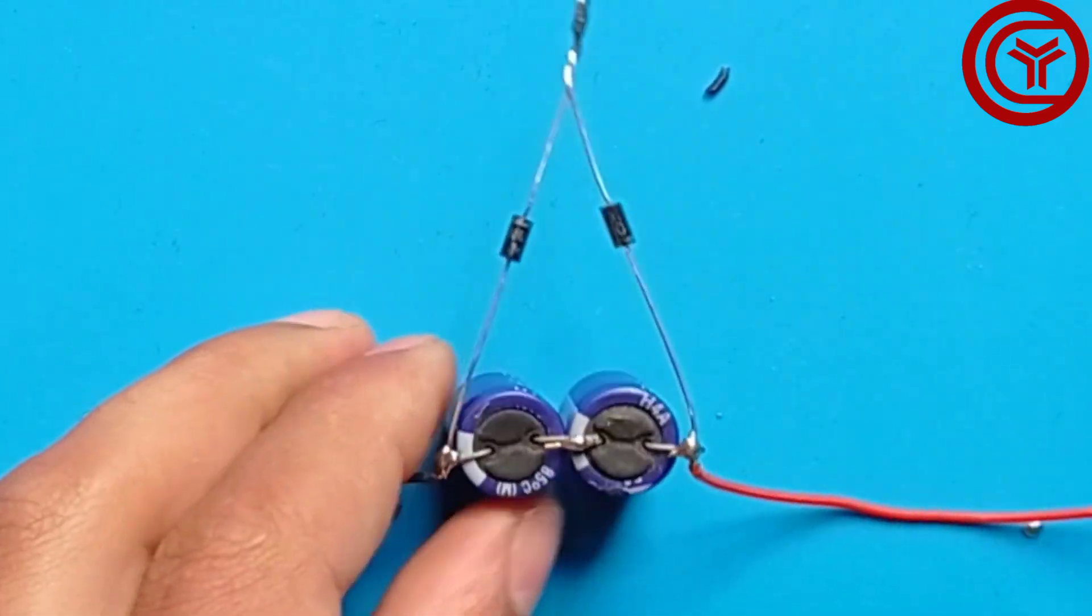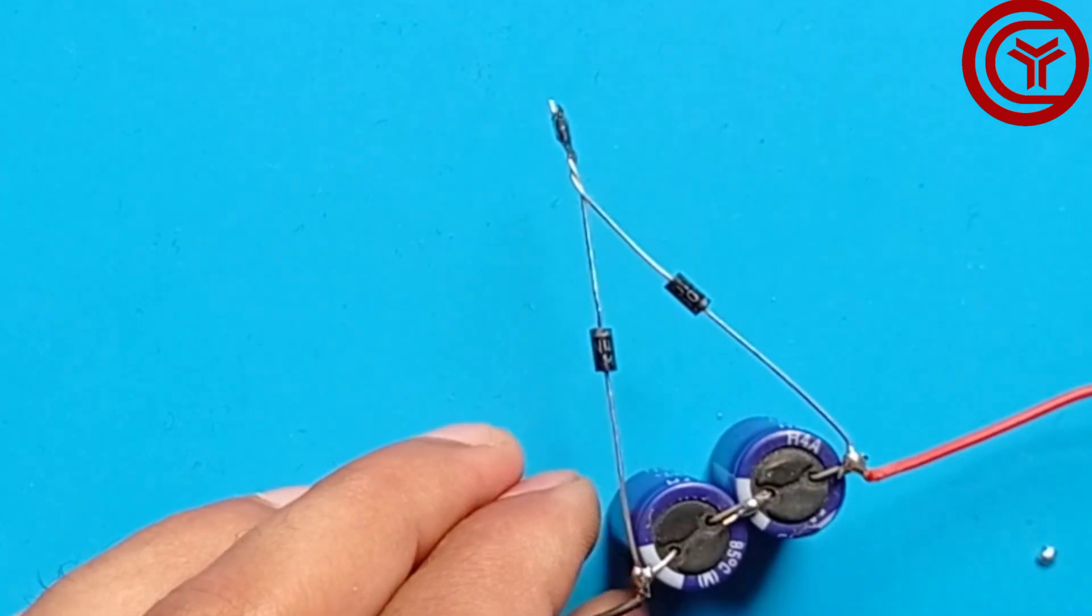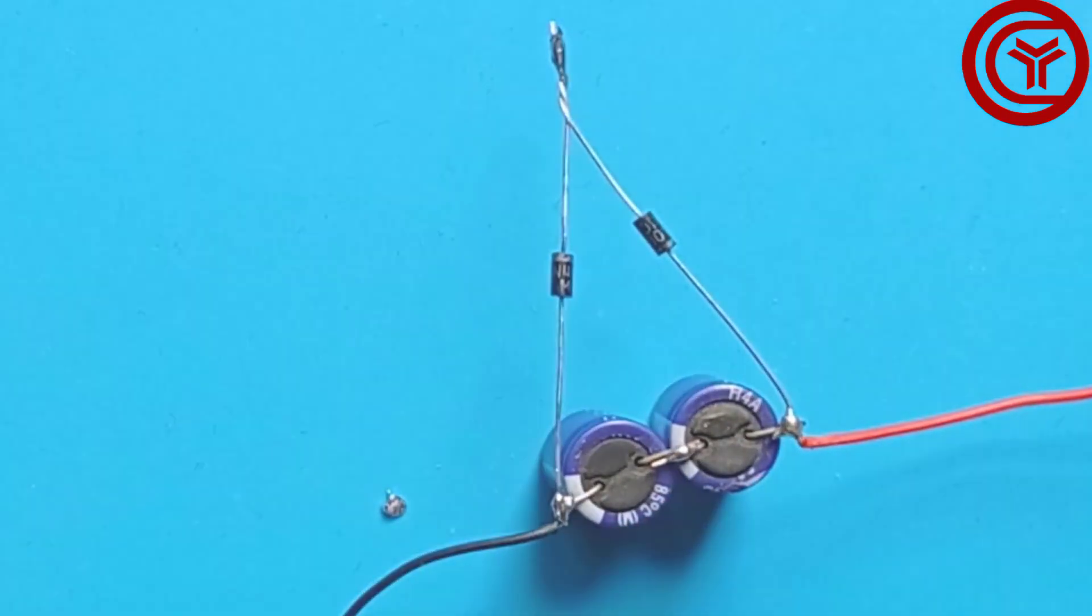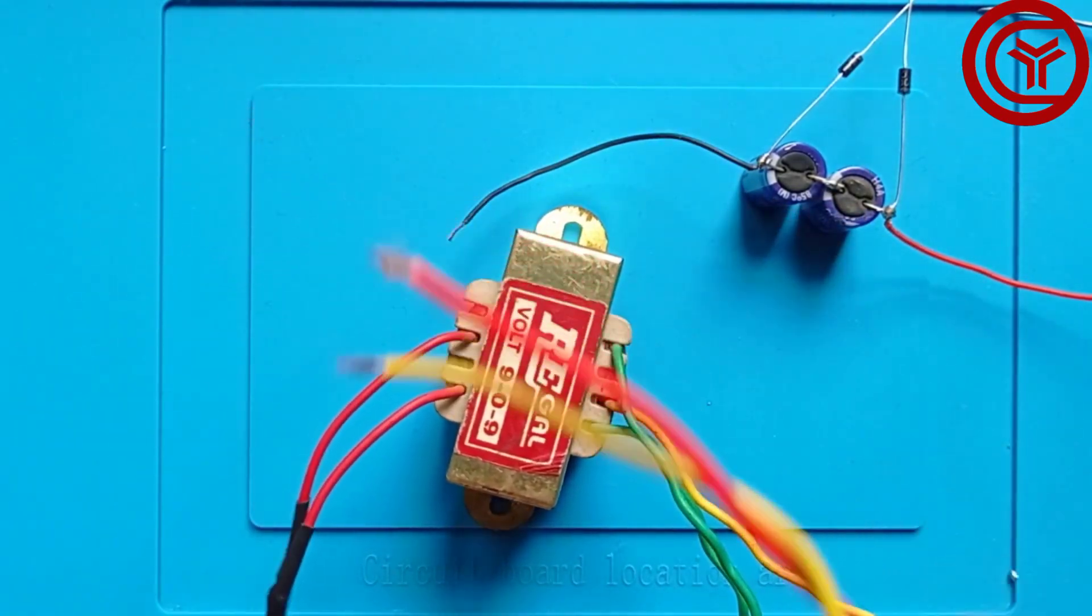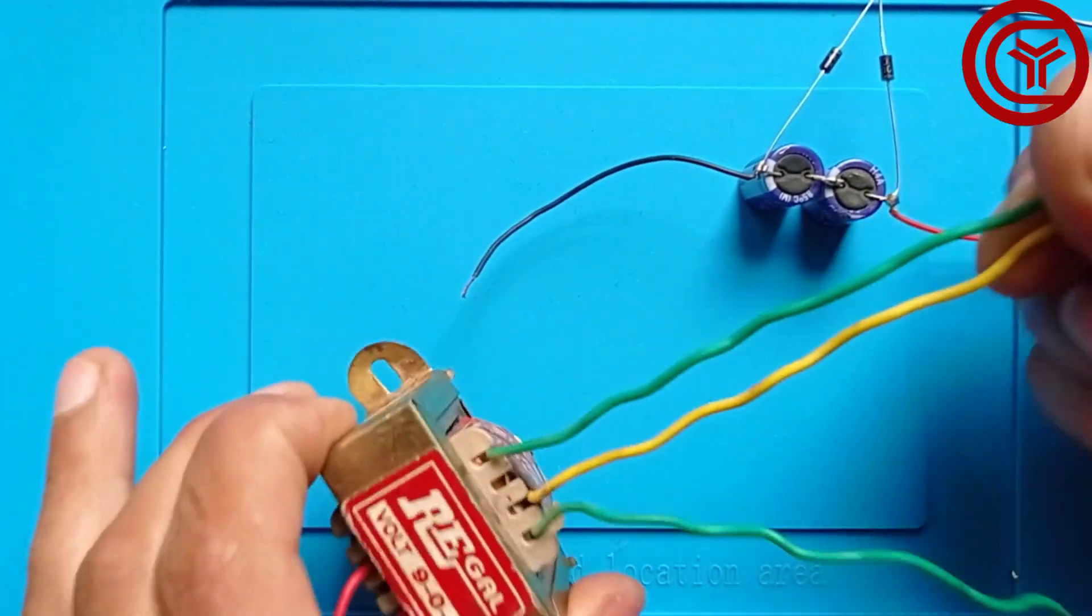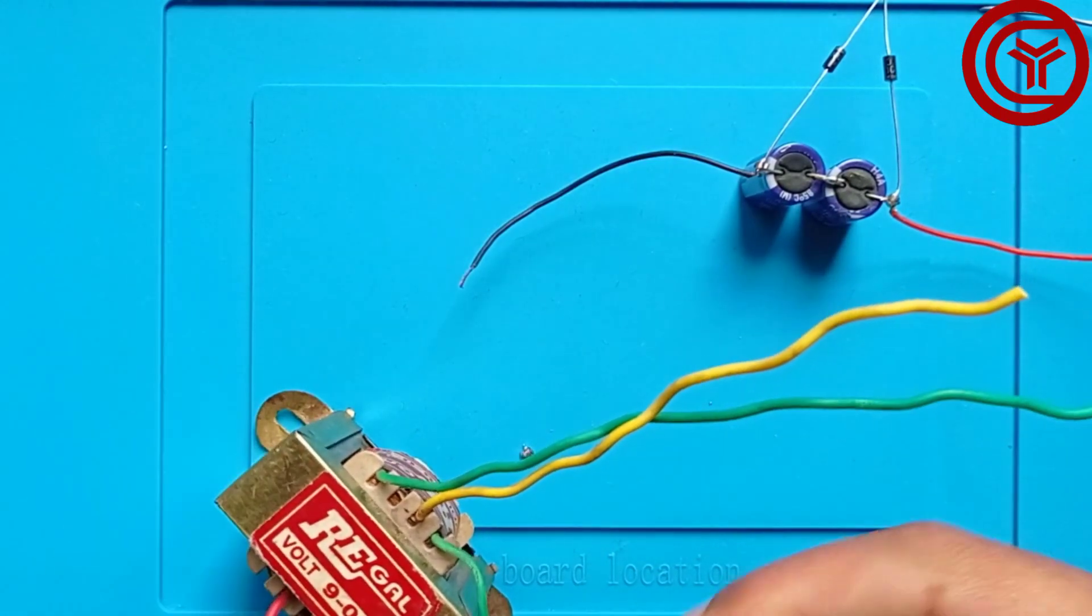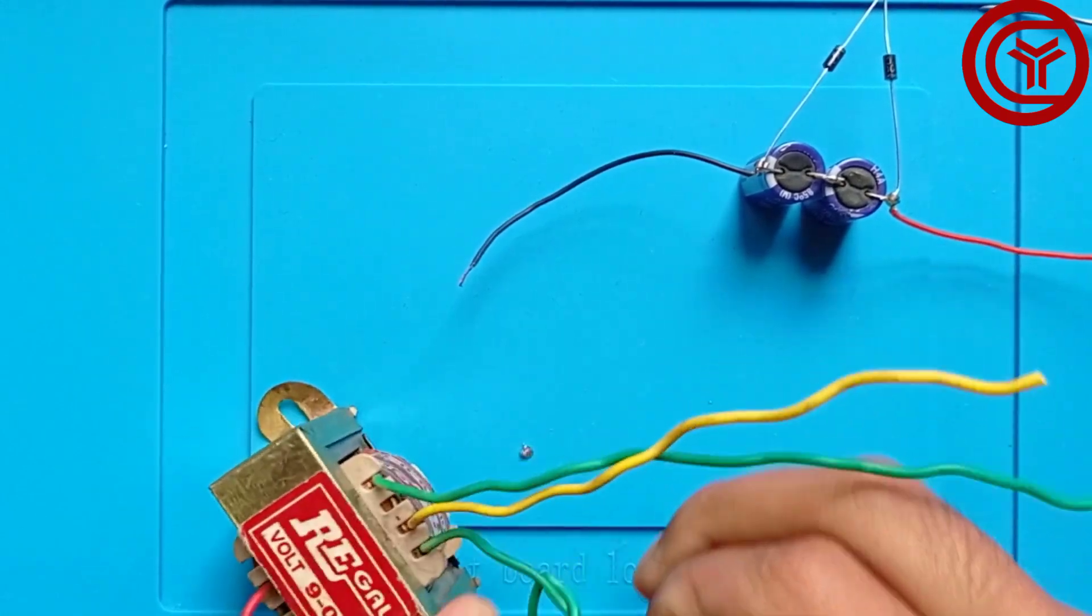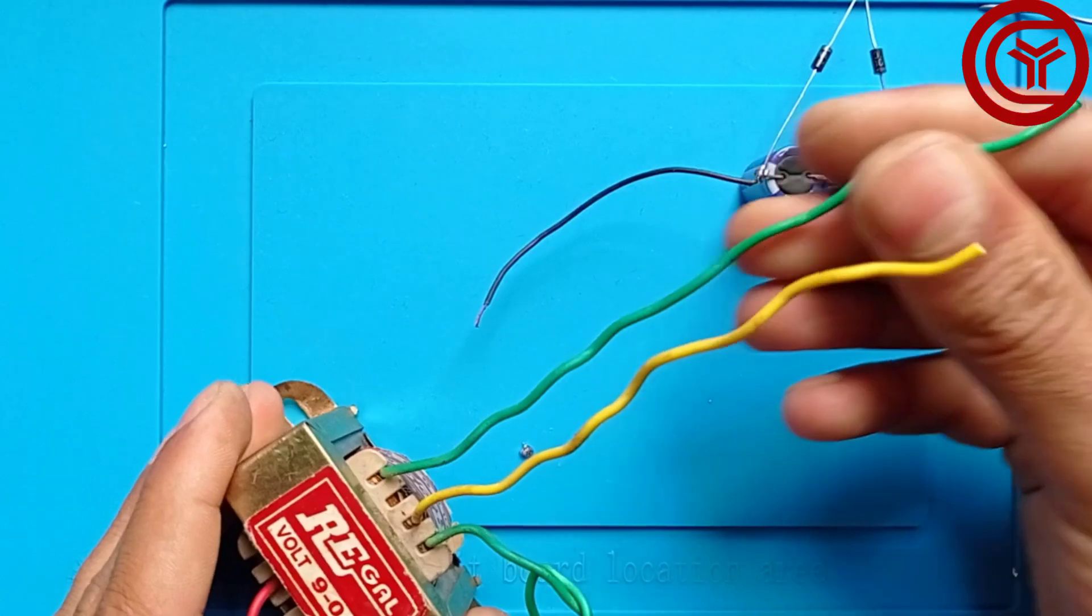We have the complete circuit now. What we need is a transformer like this - a 9-0-9 transformer. It has three wires; we're going to take only two wires so it gives 9 volts output. We'll connect that 9 volts with these capacitors and get 18 volts output.